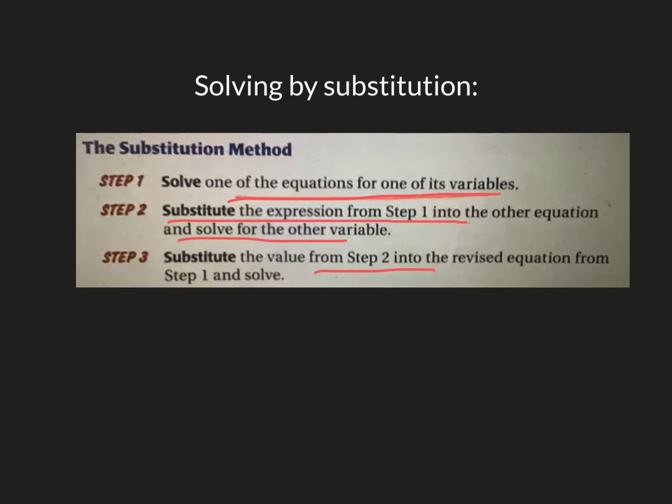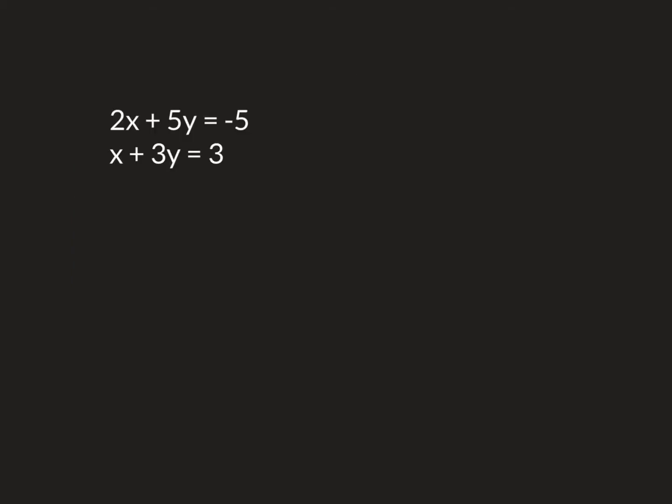It sounds like a bunch, it's really not. Let me show you one here. It's a lot easier to show you than to even explain the rules. So here we go. You got 2x plus 5y equals negative 5, and x plus 3y equals 3. What I'm looking for when I'm doing substitution is a variable like that x that has one as a coefficient.